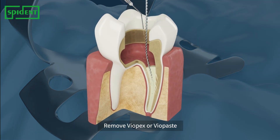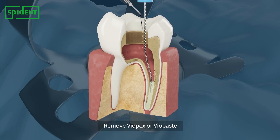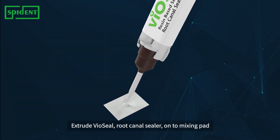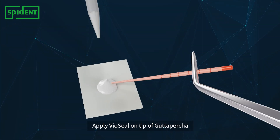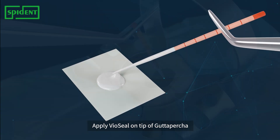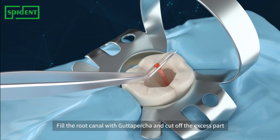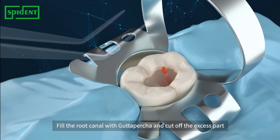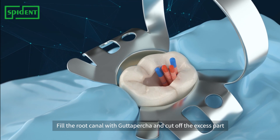When the patient feels no more pain, remove the temporary filling material using files and NaOCl. Apply gutta-percha points with VO sealer into the root canal. Fill the root canal with various sizes of gutta-percha and seal the apex so no more bacteria can enter.